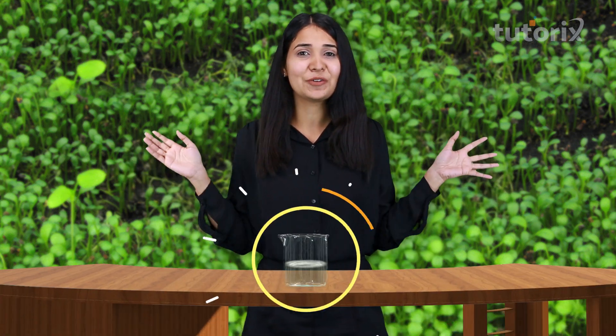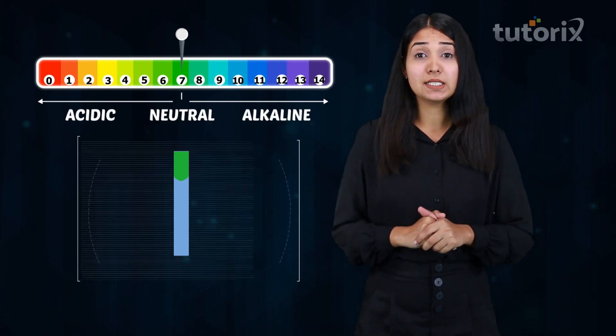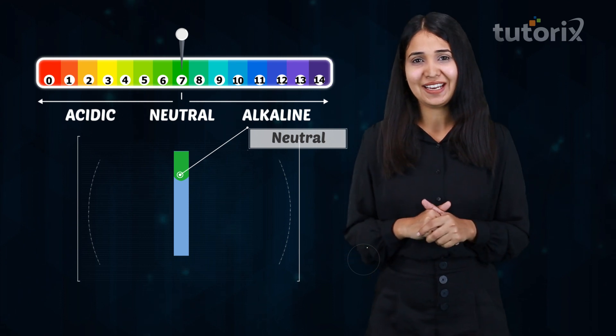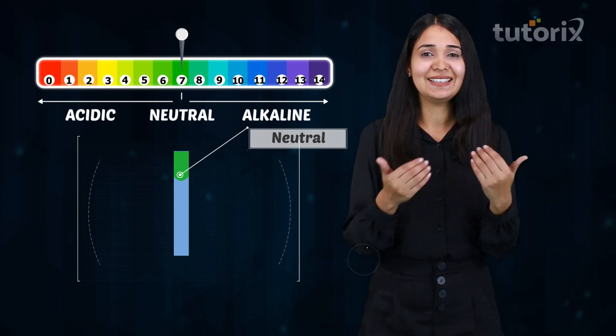The growth of plants can occur only in a specific pH range — they cannot grow in too acidic or too basic soil. You can try this yourself by collecting soil samples where plants are growing, dissolving the soil in water, filtering it, and finding the pH using a pH scale. Most plants require a neutral pH range for their growth.